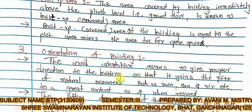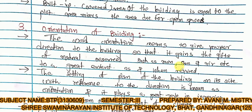Orientation of the building: the word orientation means giving the proper direction to the building so that it gains the benefits of natural resources such as rain, sun, and air to a great extent as and when required. That means we should orient the building in such a way that we can maximize the use of natural resources.